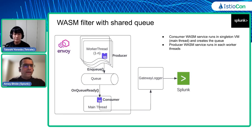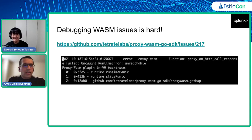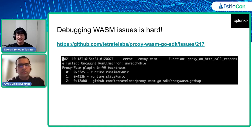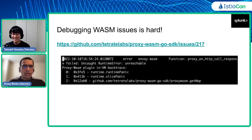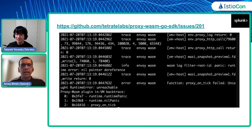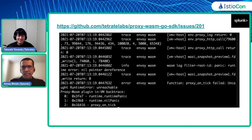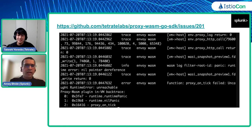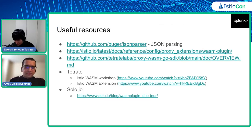We did run into issues — panics in the WASM filter. As you can see, if there's a panic in the WASM filter it is very hard to debug. Even with trace-level logging enabled on Envoy, the tracebacks are very hard to interpret to understand what's going on. Thanks to Tetrate and Takeshi for fixing those bugs in the SDK.